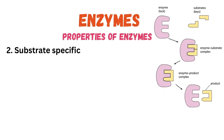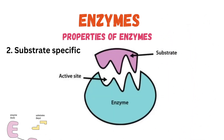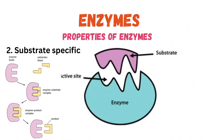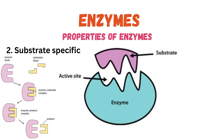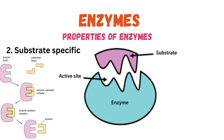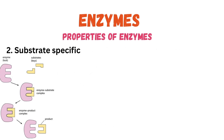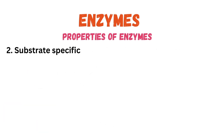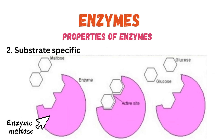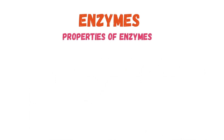Another characteristic of enzymes is that they are substrate specific. This means a particular enzyme will only act on a particular substrate. A substrate is the substance on which an enzyme acts. For example, enzyme maltase will only catalyze maltose — it will only break down maltose to form glucose and no other substrates.